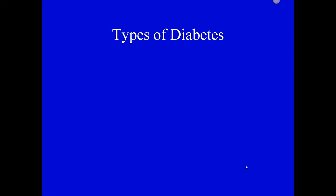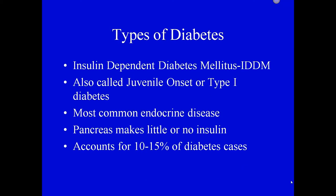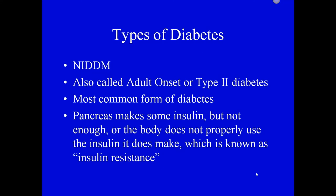Insulin-dependent diabetes mellitus is called IDDM, also known as juvenile onset or type 1 diabetes. It is the most common endocrine disease, but it only accounts for 10% to 15% of diabetes cases. In IDDM, the pancreas is not working properly to produce insulin. Patients are usually diagnosed when younger — under 35 years of age — which is why it's sometimes called juvenile onset, though in a patient's chart you'll most commonly see IDDM or type 1 diabetes.